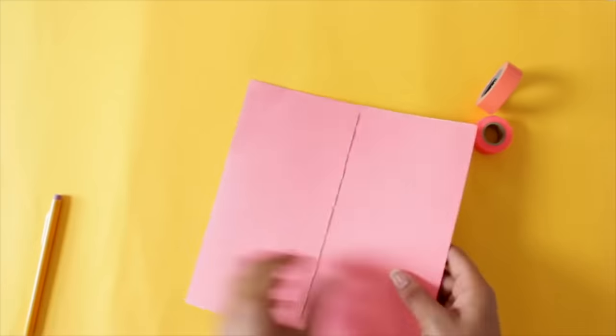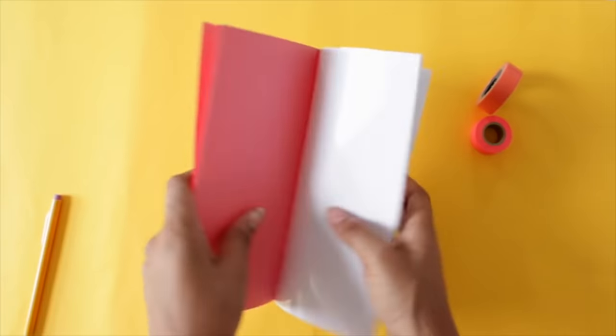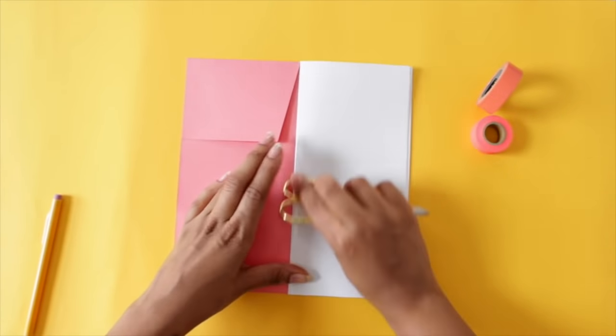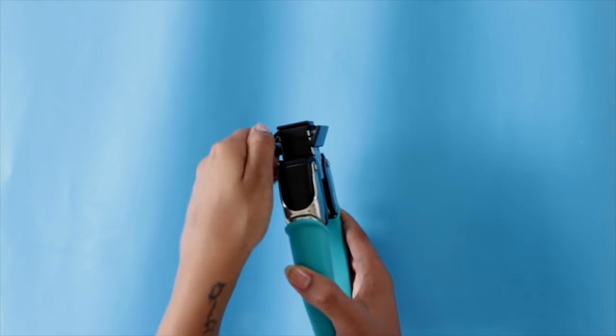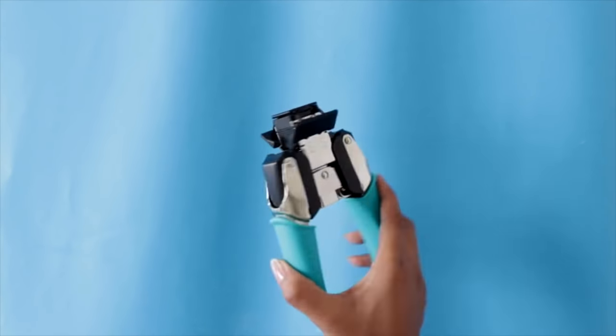When you're done fold your cover backwards and your paper's in the opposite direction. Again you can use a bone folder and you can call it quits but I'm going to add a personal touch by rounding my corners and to do that I'm going to use a corner chopper because it makes my life easier.